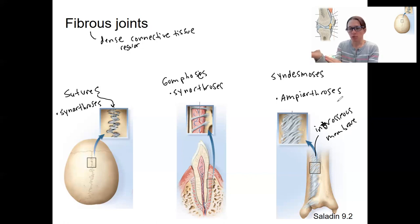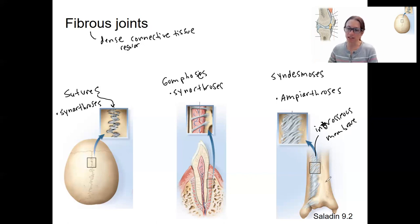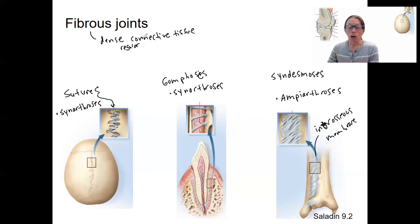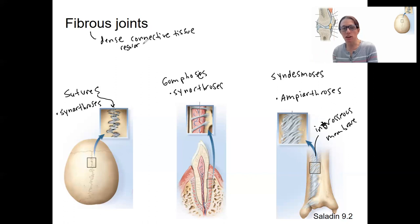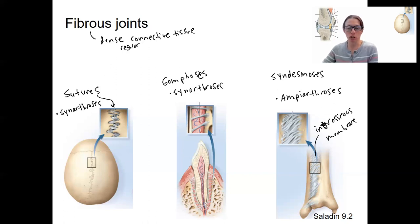In between the radius and ulna of your forearm, and in this picture, the fibula and tibia of your lower leg. Those are the three types of fibrous joints. They are always made of dense connective tissue, but the examples can be either synarthroses — no movement — or amphiarthroses — very little movement. You're never going to have them be extremely mobile.